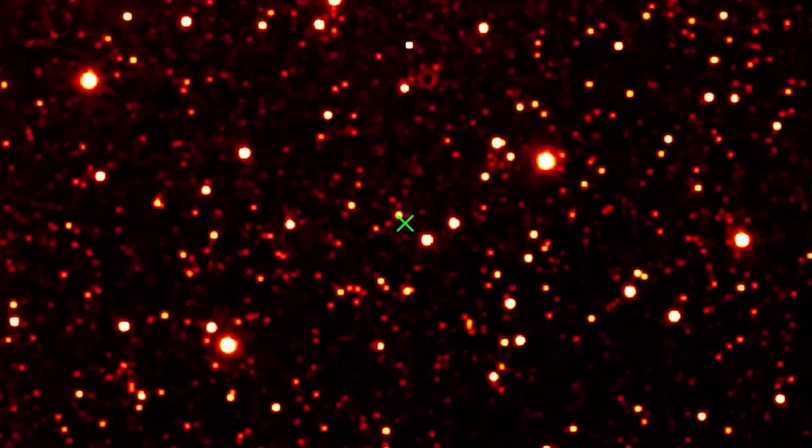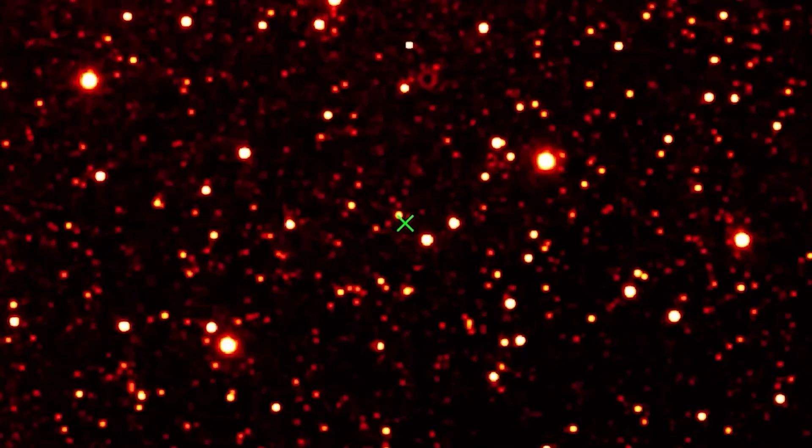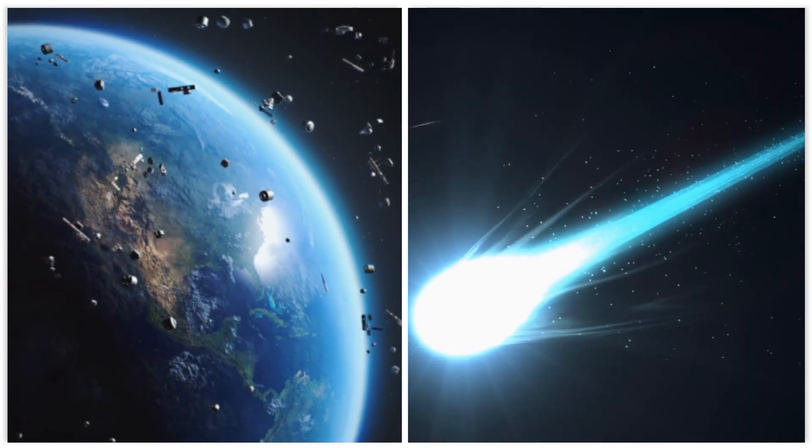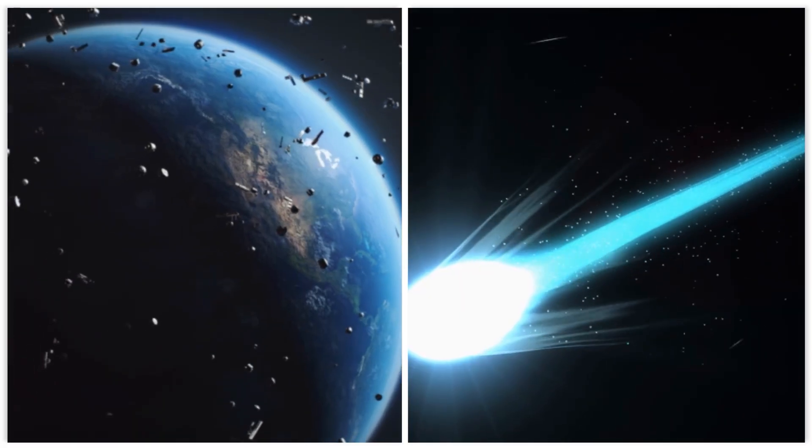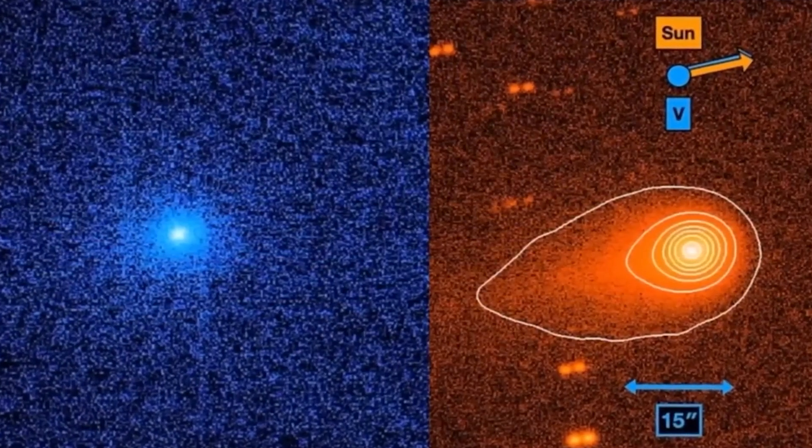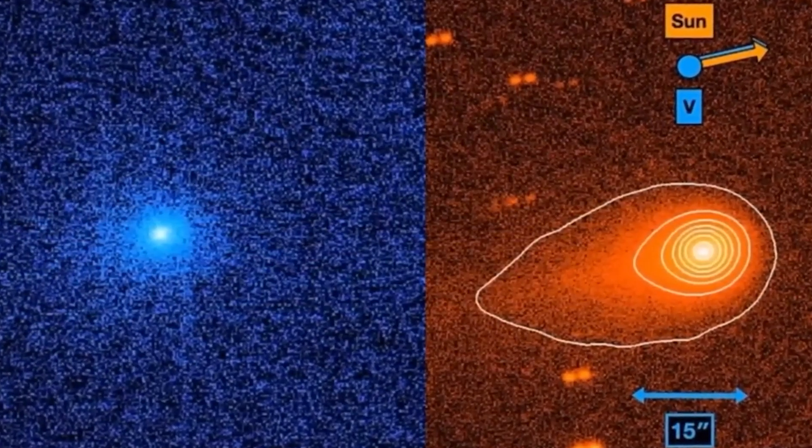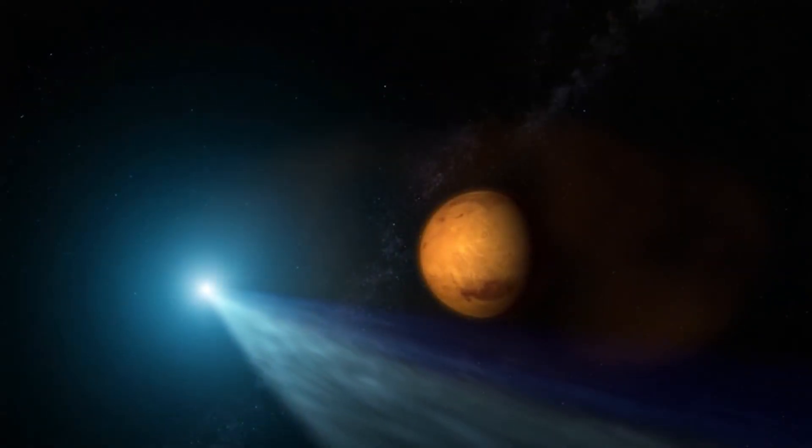The truth nobody tells you is that when dealing with objects moving at 42 miles per second, even a tiny shift in predicted debris fields, or a larger-than-expected coma, can make the difference between a safe passage and a catastrophic collision.